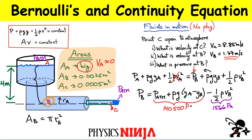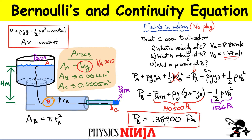So we get the large static pressure and then subtract the kinetic energy contribution. The pressure at point B when fluid is moving is approximately 138,900 Pa. Notice this is slightly lower than the static case of 140,500 Pa — consistent with Bernoulli's principle: faster moving fluids have lower pressure. You could also have set up the equation using point C as the comparison and would get the same answer.